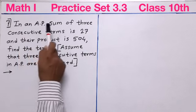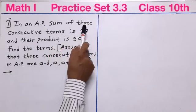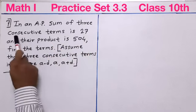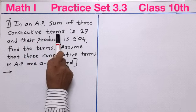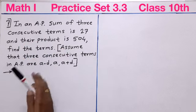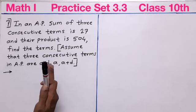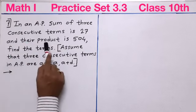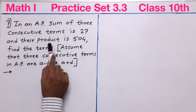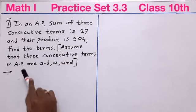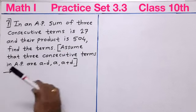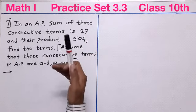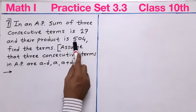In an arithmetic progression, the sum of three consecutive terms is 27. Consecutive terms means adjacent terms, just like 1, 2, 3 are adjacent terms. And the product of the same three consecutive terms is 504. Find the terms — what are those terms whose sum is 27 and product is 504.